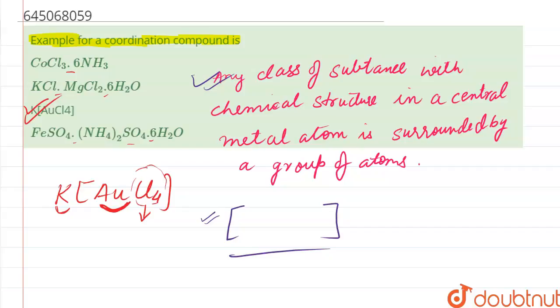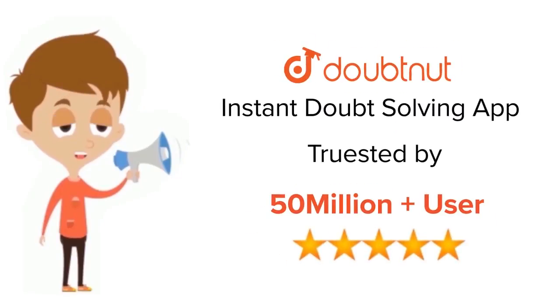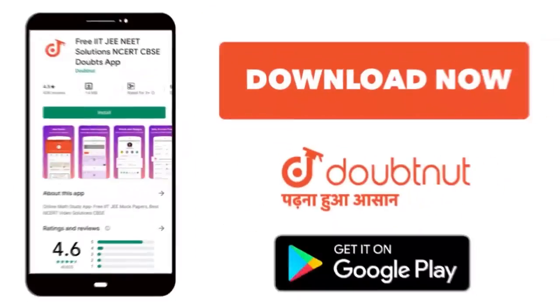So that it is forming a coordination compound. So our answer is option number C. For class 6 to 12, IIT, JEE and NEET level, trusted by more than 5 crore students, download Doubtnet app today.